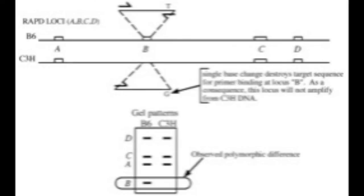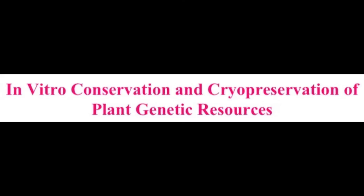There are different kinds of markers: microsatellites and single nucleotide polymorphism (SNP), restriction fragment length polymorphism (RFLP), random amplified polymorphic DNA (RAPD) markers, and amplified fragment length polymorphism (AFLP). Here is a small picture of the amplified fragment length polymorphism.